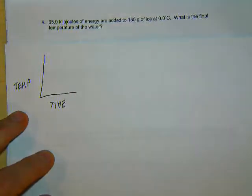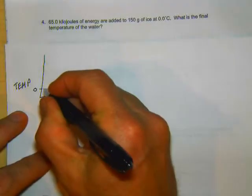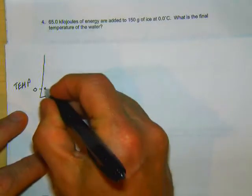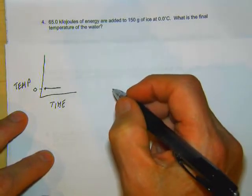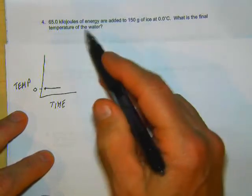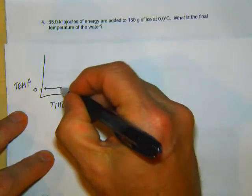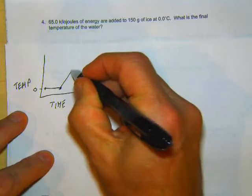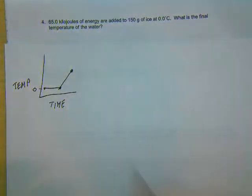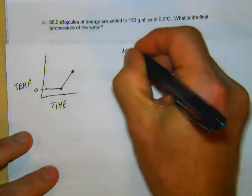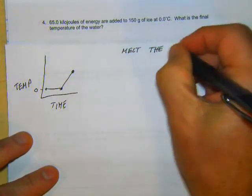Alright, so we got some ice at zero and so we've got to melt the ice and then we want to know the final temperature of the water because we're going to add some energy to this. So we want to know the final temperature. It's going to be somewhere up there. So first thing we need to do is melt the ice.